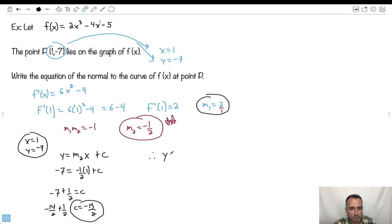So finally, the equation then will be y equals, let's see, m2 which is -1/2 here, times x plus c, which is -13/2. So this is my final answer. I'm done.